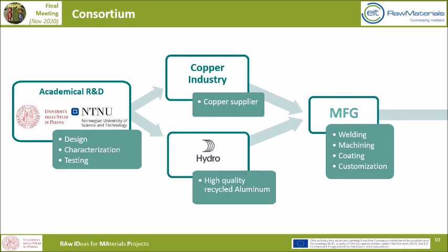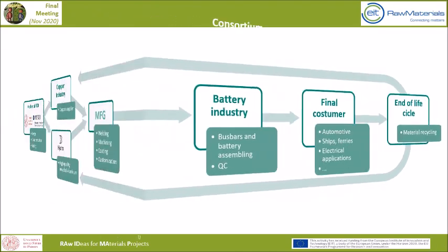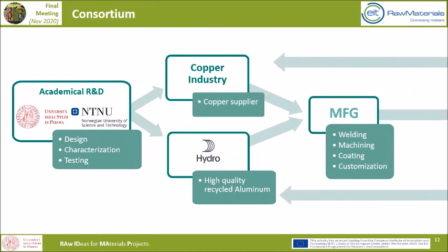The manufacturing company will adapt the product by varying sizes, the sizes of the holes, and so on. Once the component is manufactured, it can be sold to the battery industry, where the bus bars are assembled on the battery pack and quality controlled. The final user could be any kind of industry which could heavily employ battery packs — for instance, all kinds of vehicle producers such as cars, ships, and ferries. As the last step, at the end of its life, the product is disposed of and recycled, going back to Hydro and a potential recycled copper supplier.